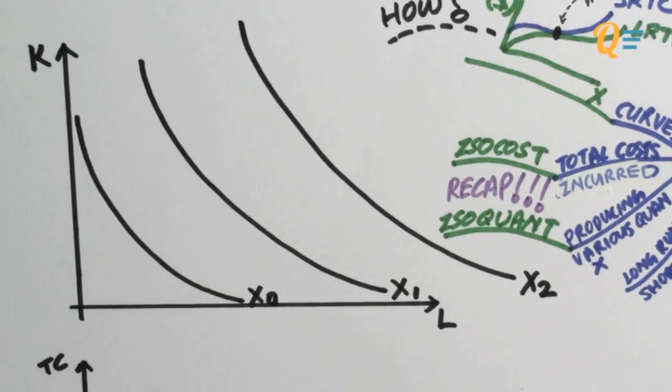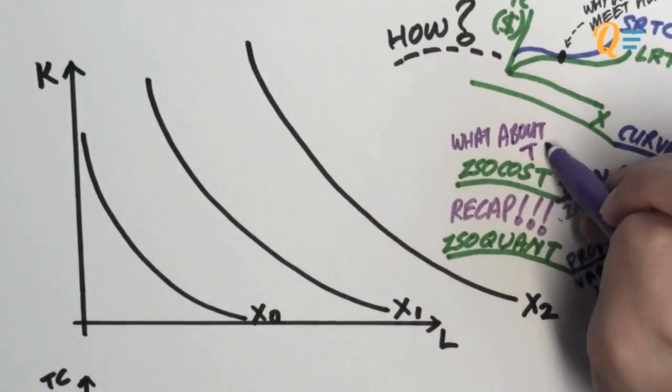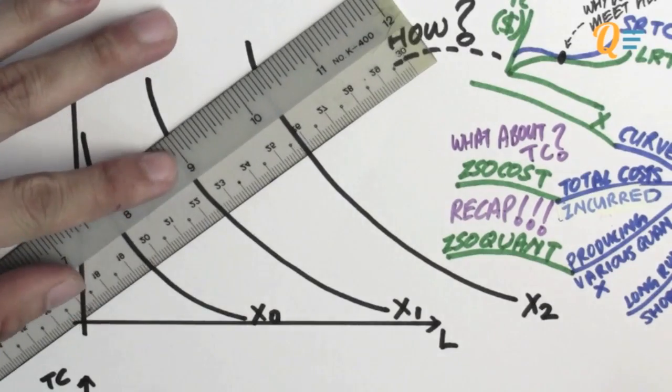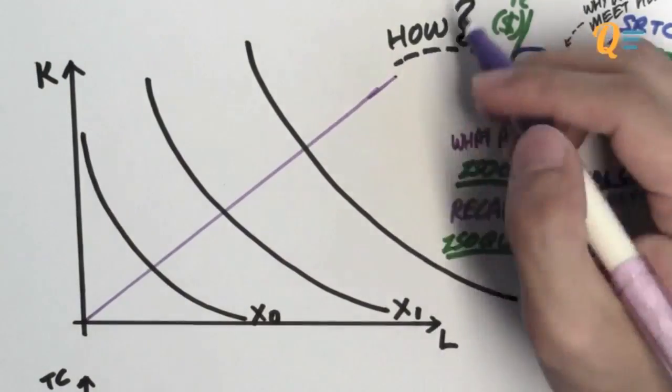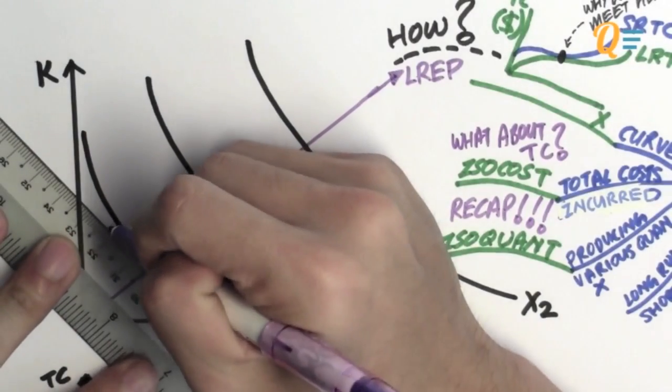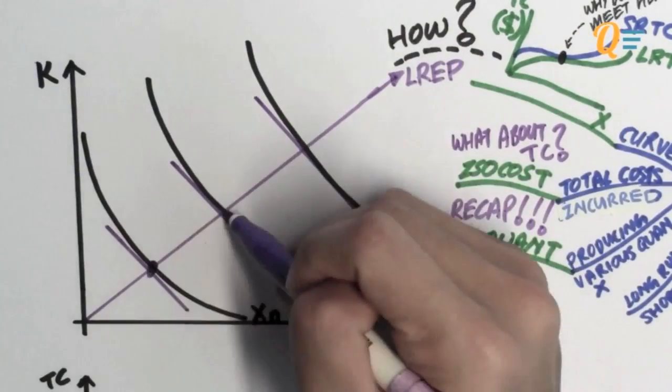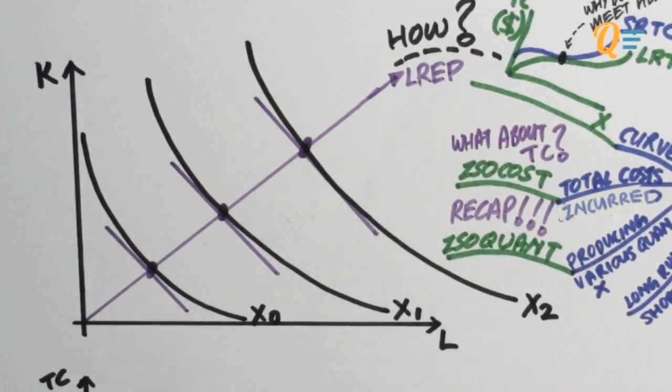So how do we find the total cost using the isocost? Well, I hope you recall the concept of the long-run expansion path because this expansion path contains all the points where the isocost is tangent with the isoquant, just like what you see over here. Okay, so these are the three points that the firm will be producing at. I mean this is going to show the amount of labor and capital they're going to need to be producing these quantities of X naught, X1, and X2.